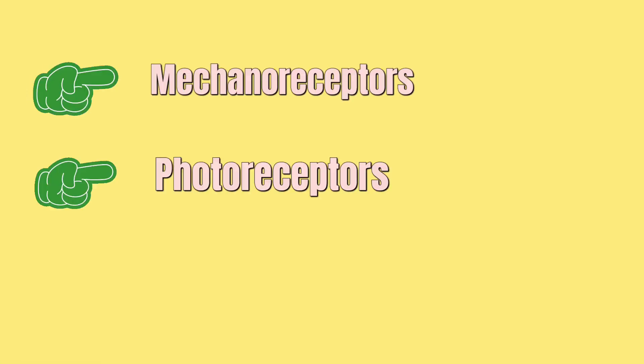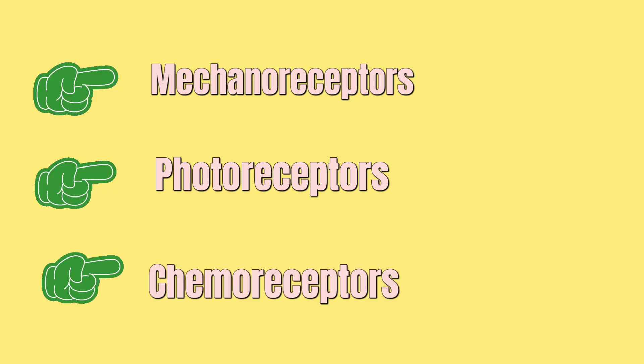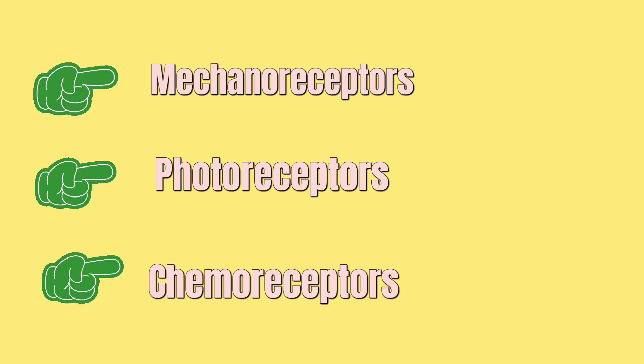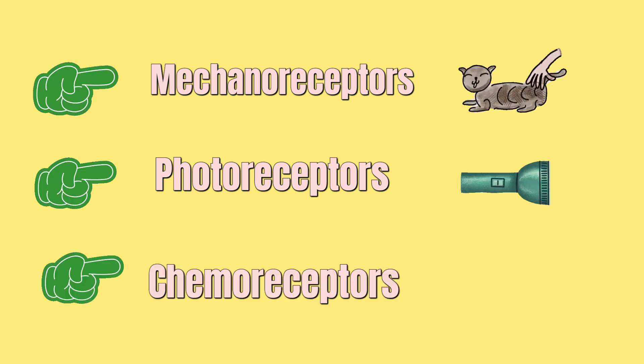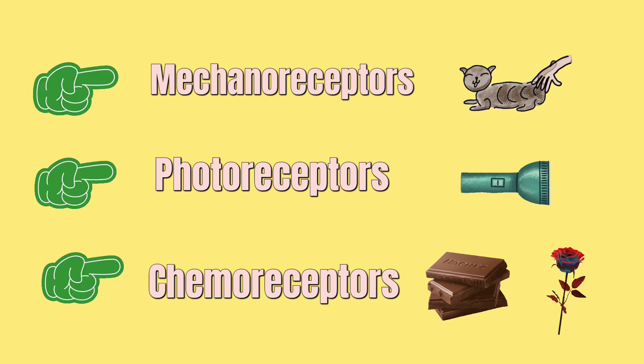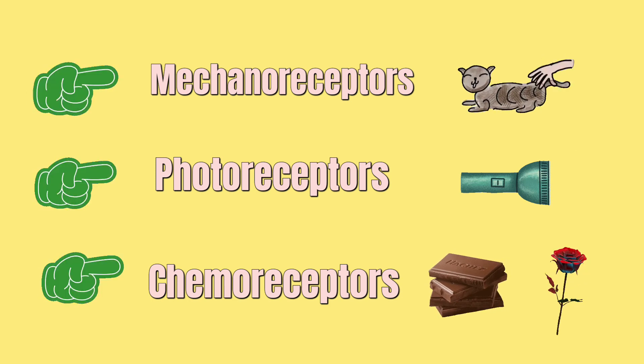Different receptors take in different sensory information: mechanoreceptors in the skin respond to touch, photoreceptors to light, and chemoreceptors to taste and smell.